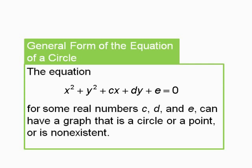Now on to the second formula — the general form for the equation of a circle. The general form is: x squared plus y squared plus Cx plus Dy plus E equals 0. For some real numbers C, D, and E, this can have a graph that's a circle, a point, or is non-existent.